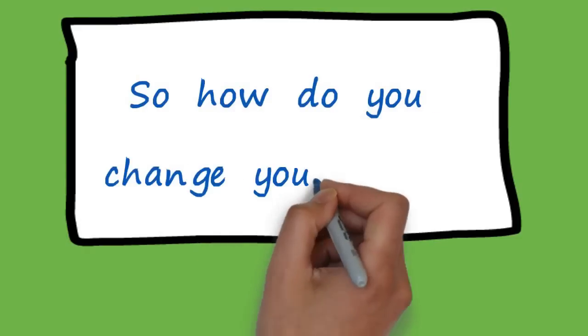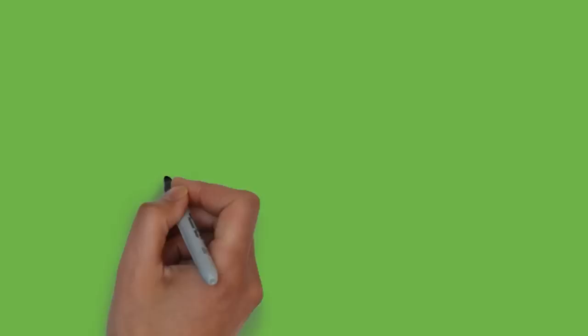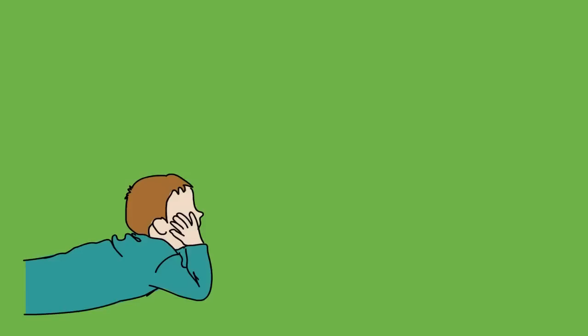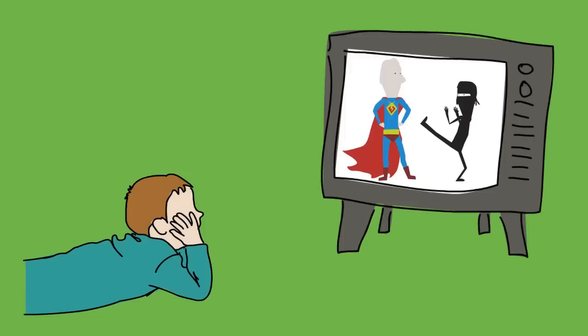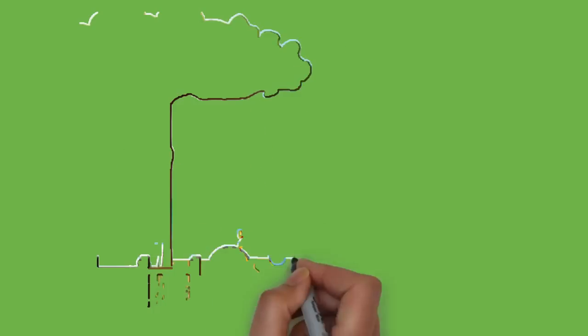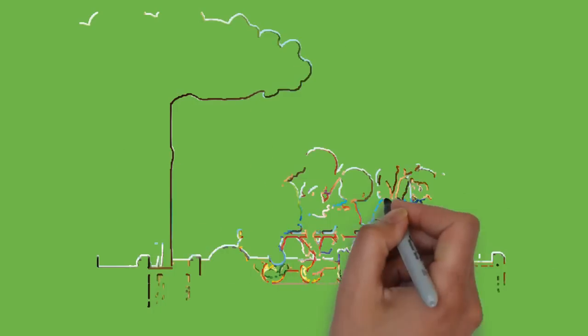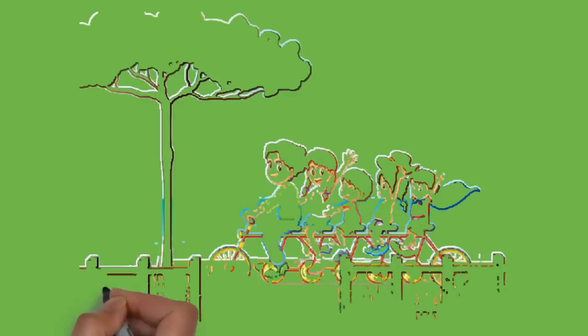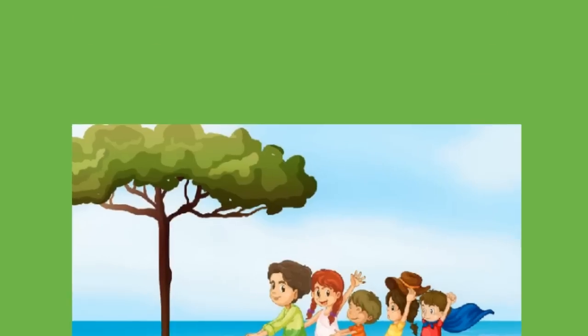So how do you change your brain? It's just learning. Children learn to play a video game and they never read a manual. Their brain figures it out. How do you balance on a bike and not fall over? Somebody probably showed you, but it's your brain that figured out how to balance.